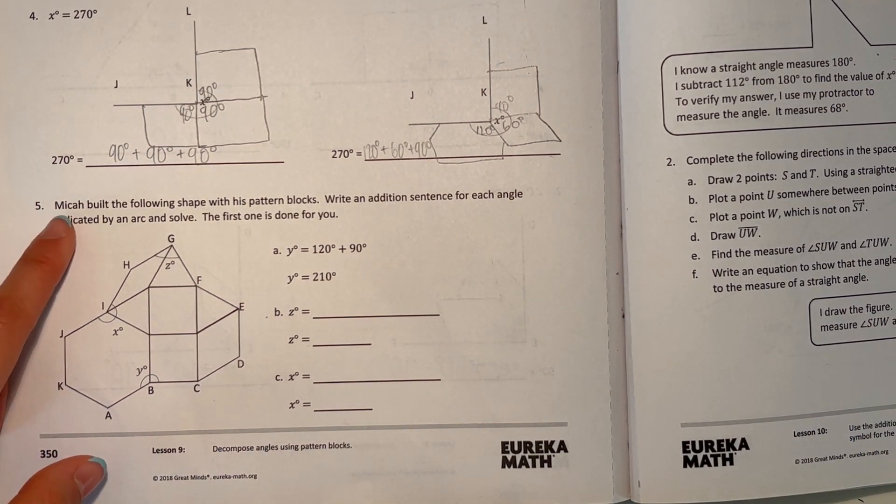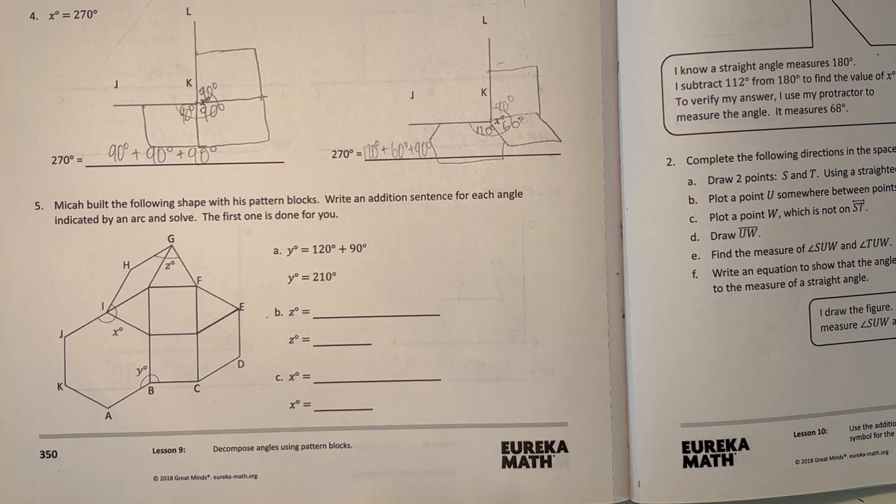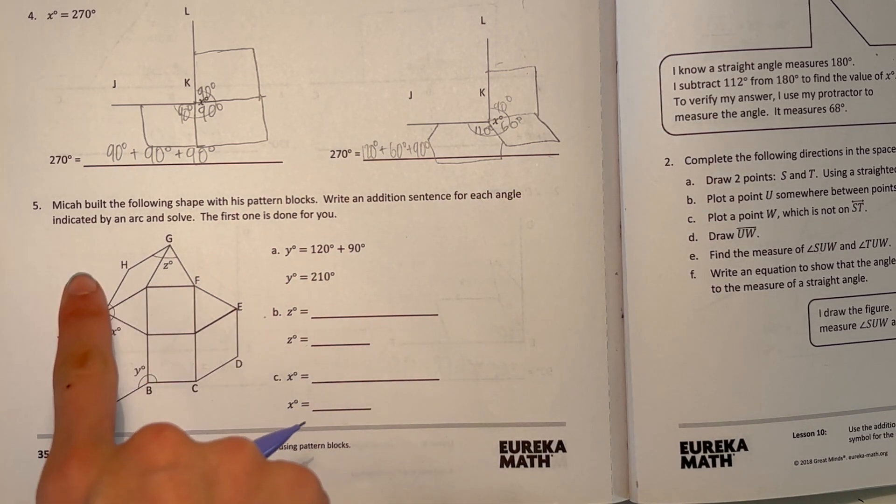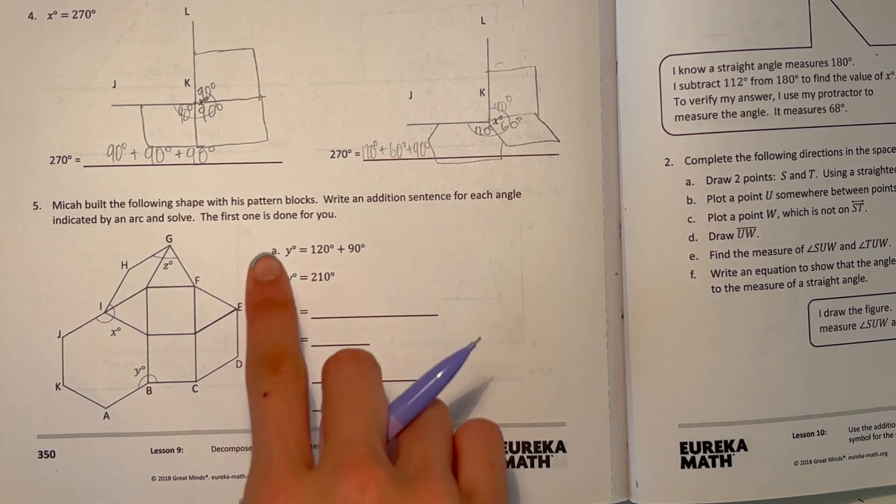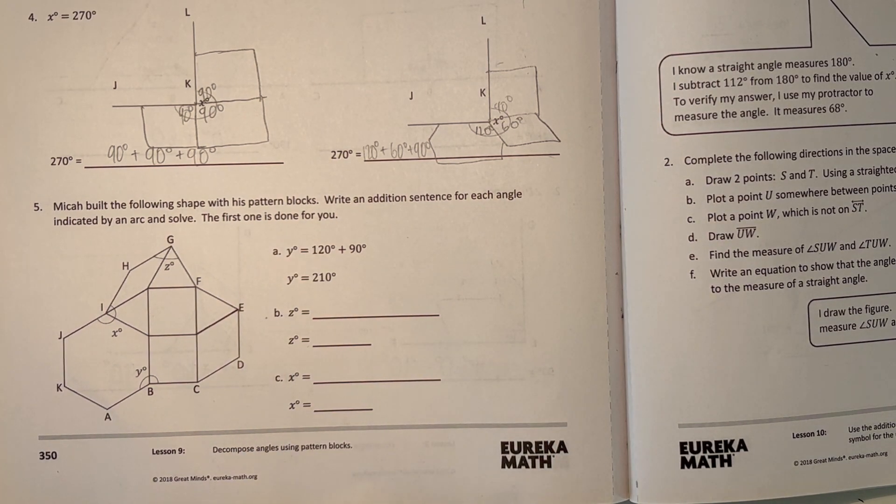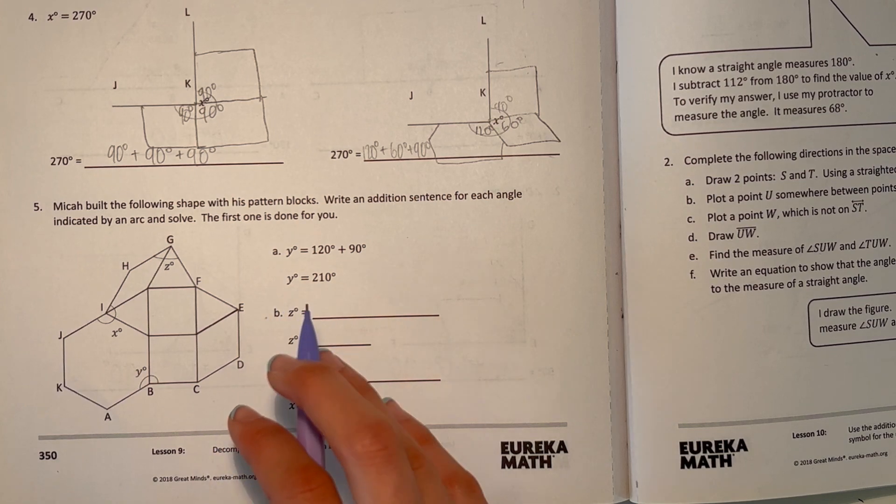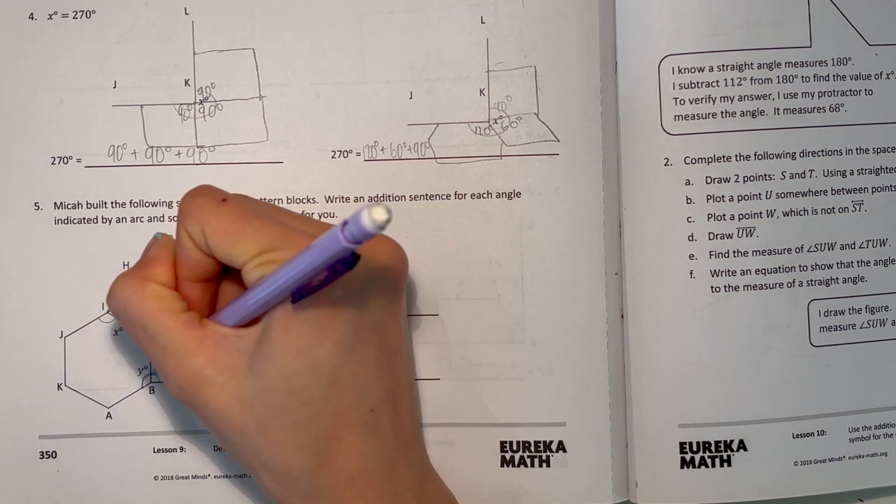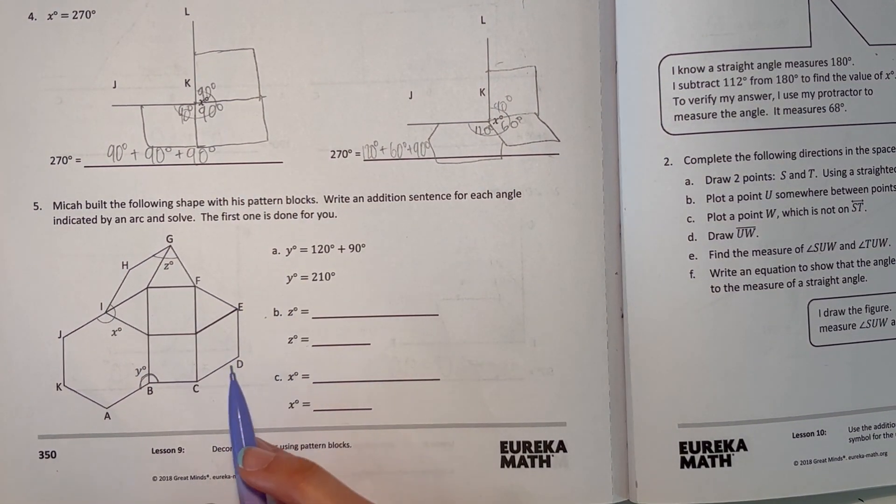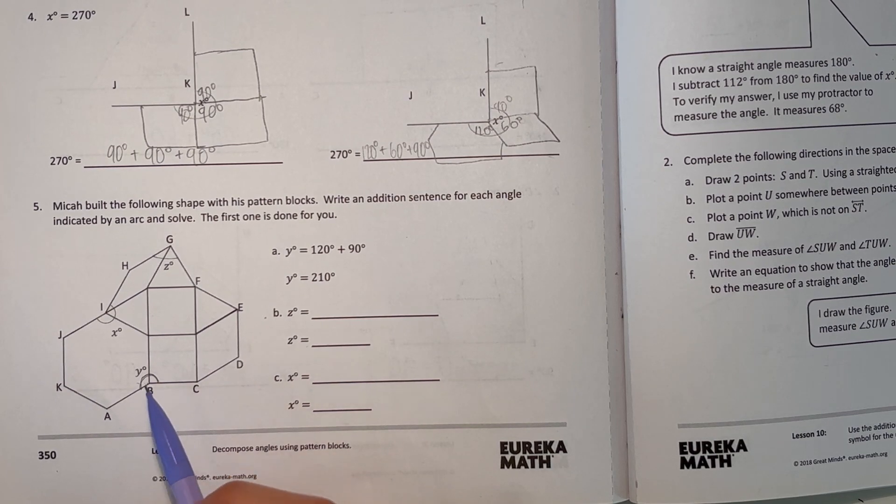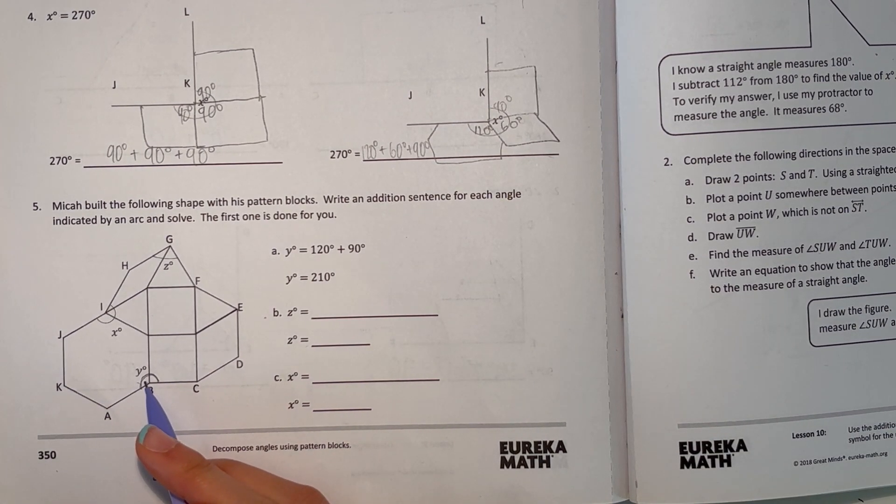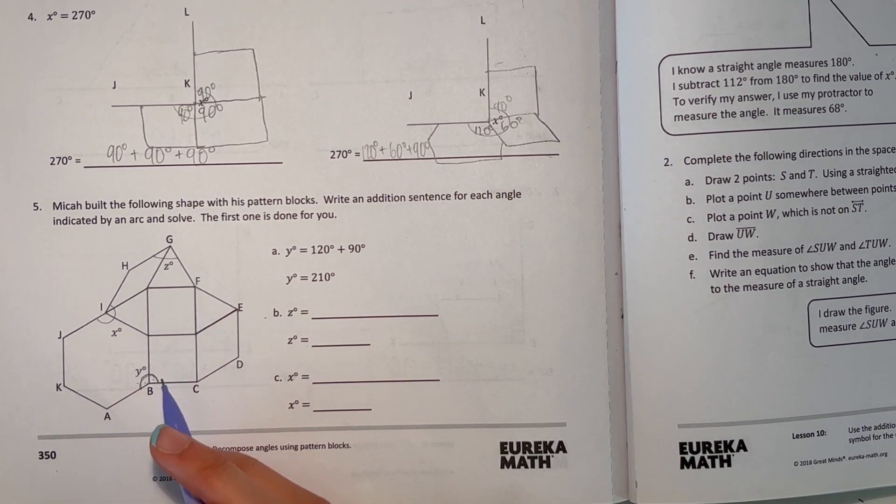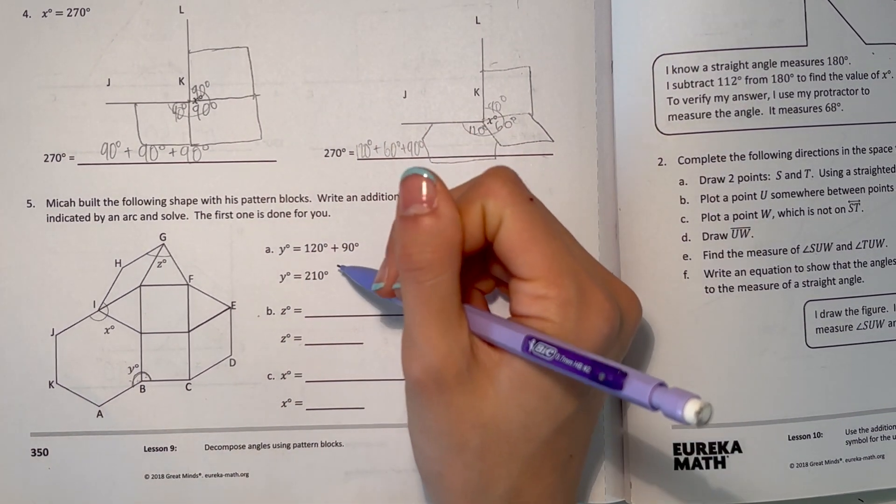Build the following shape with pattern blocks. Write an addition sentence for each angle indicated by an arc. The first one is done for you. So the first one, they have y. So y is here, so the arc is what we're measuring this angle. First this part is part of the hexagon, so this part is 120 degrees. And this is part of a square, so it's 120 plus 90 degrees, which is 210 degrees.